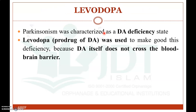Coming to the first drug, levodopa. Since Parkinsonism is mainly due to decreasing dopamine in the brain, we could treat it by giving dopamine directly. However, dopamine cannot cross the blood-brain barrier. So, in order to cross the blood-brain barrier, we formulate dopamine as a prodrug — that is levodopa — which is why we use levodopa as a precursor for treating Parkinson's disease.